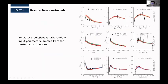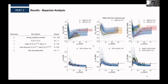And this is the model prediction using again, 200 random input parameters. But instead of samples from the prior distributions, we're now sampling those parameters from the posterior distribution. And you can see now, the model calculations can agree pretty well with the data.